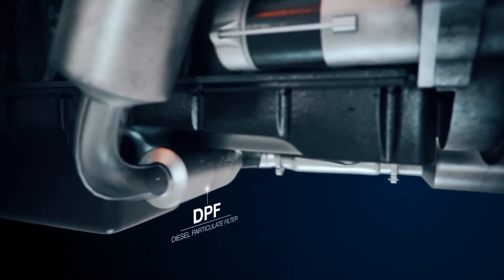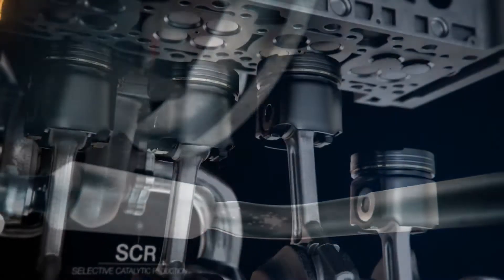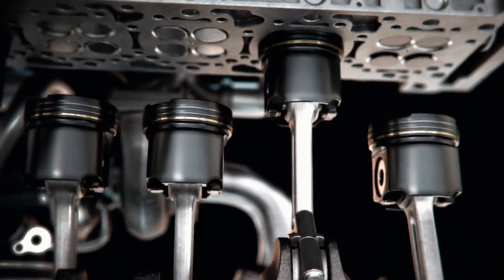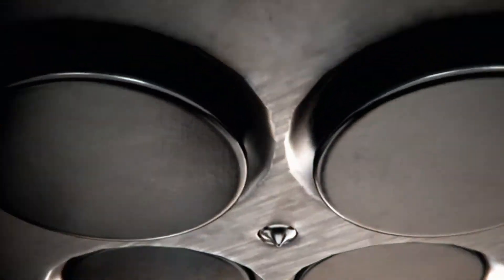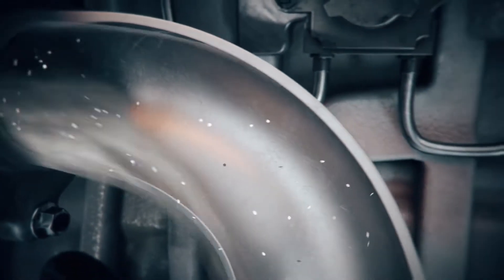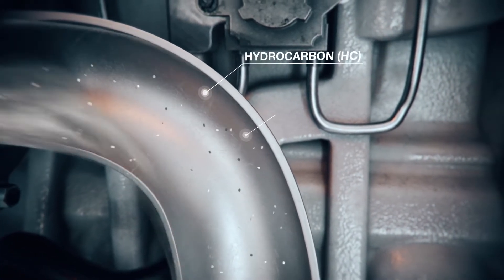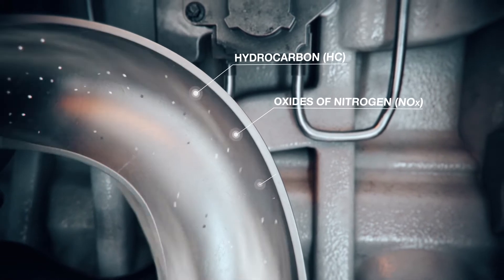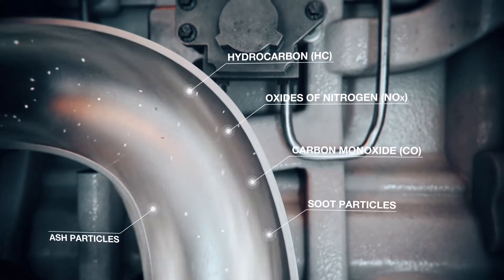These devices help meet the stringent limits by chemically converting harmful exhaust emissions into less harmful gases and filtering out the particulates. Let's look at each one and understand how they function. The exhaust gases coming out of a diesel engine consist of harmful hydrocarbons, oxides of nitrogen, and carbon monoxide, along with soot and ash particles from the combustion process.